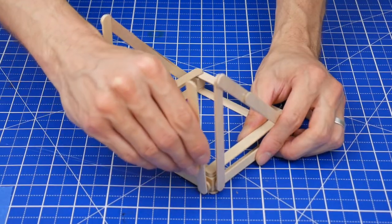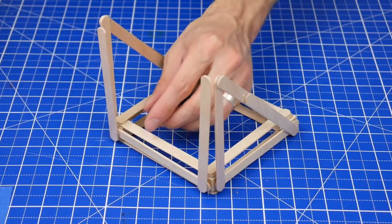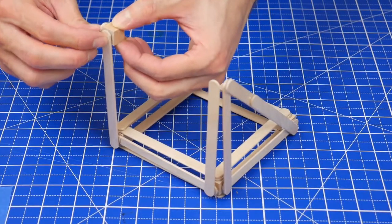Next glue two more vertical sticks onto the front corners of the slingshot. Then connect the vertical sticks with another cube on top.